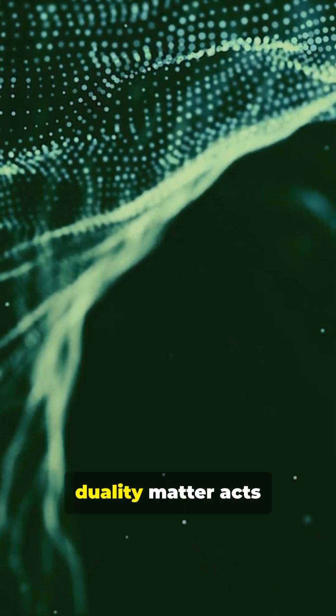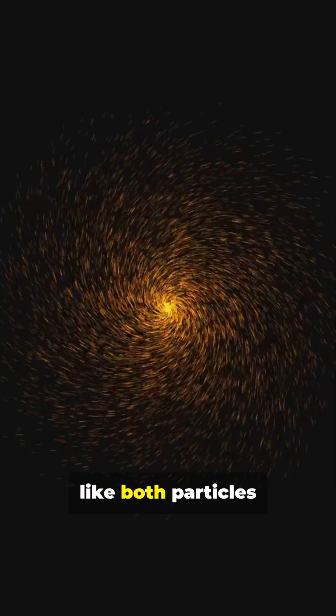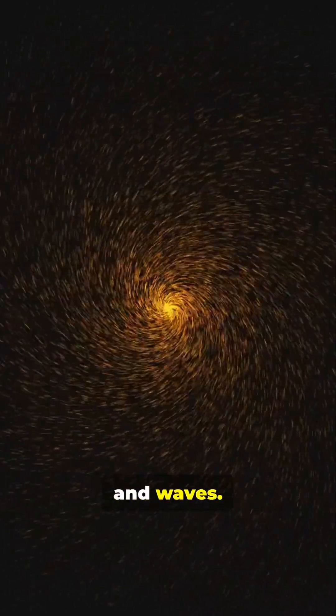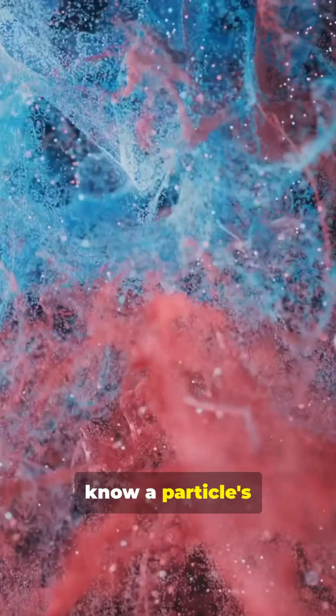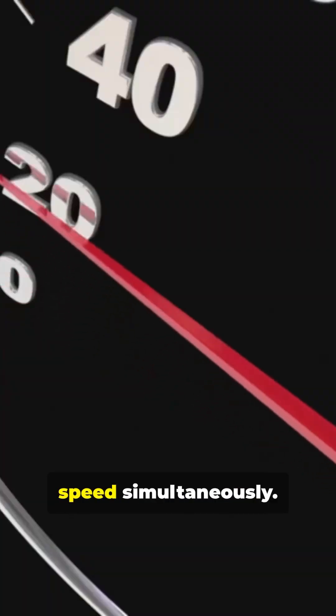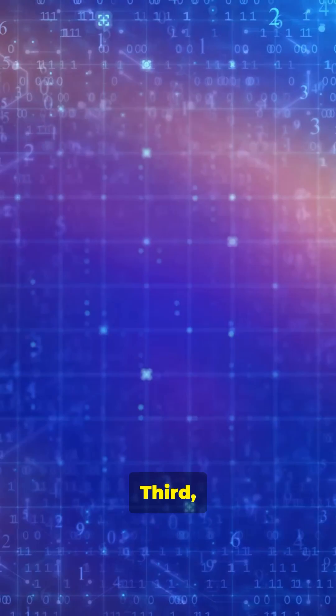First, wave-particle duality: matter acts like both particles and waves. Second, the uncertainty principle: you can't know a particle's exact position and speed simultaneously.